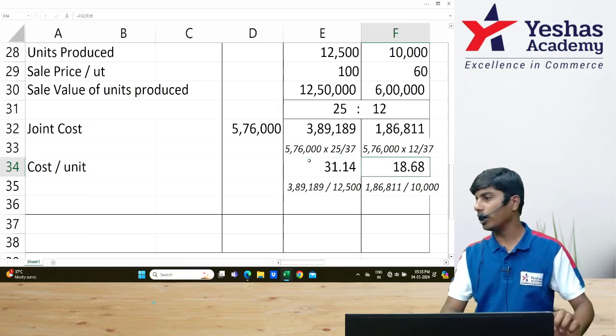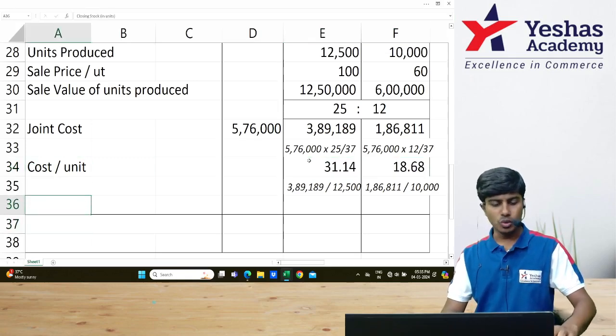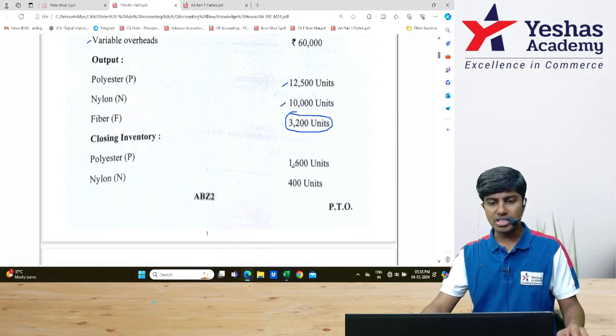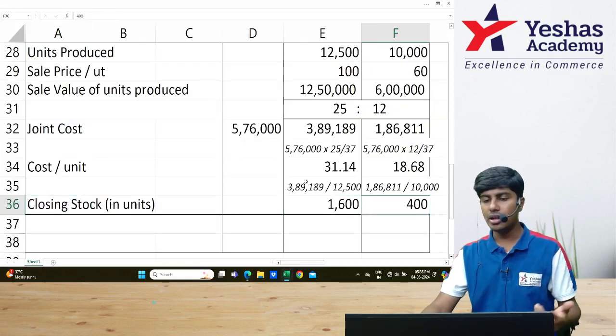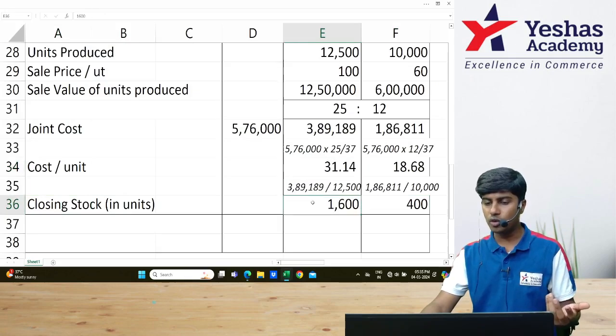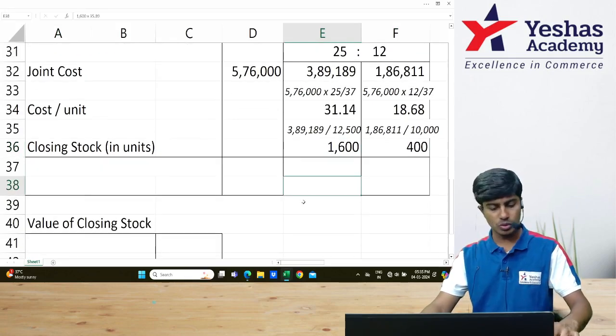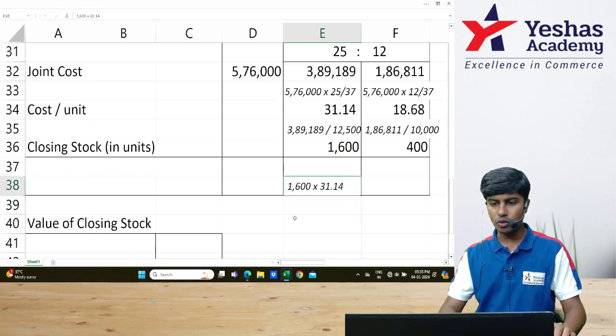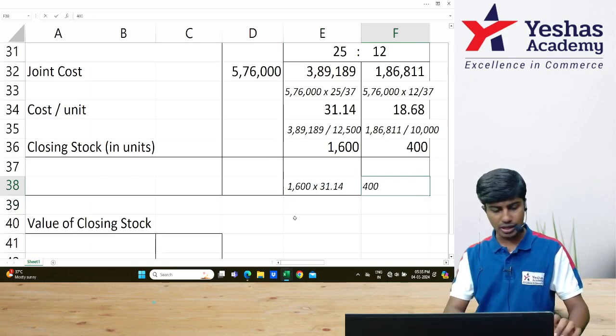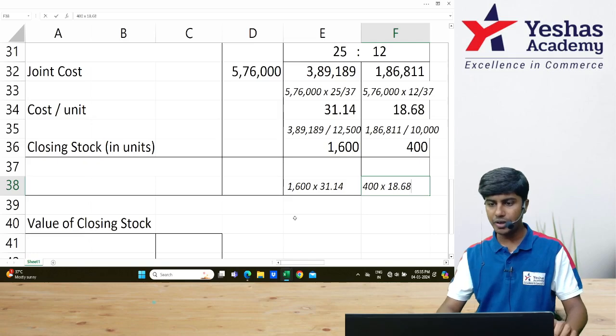₹31.14 and ₹18.68. How many units of closing stock is remaining with me? What is remaining is 1,600 and 400. I will take 1,600 here, 400 here. I will multiply ₹31.14 with 1,600 to arrive at my closing inventory. Similarly, I will write 400 multiplied by ₹18.68.